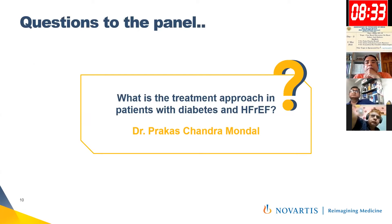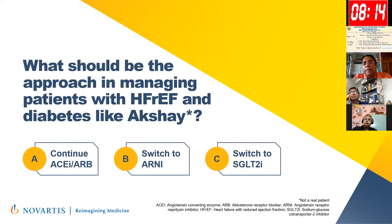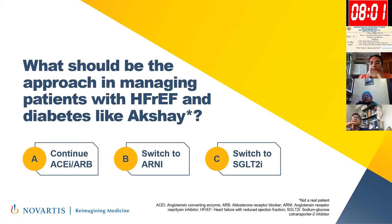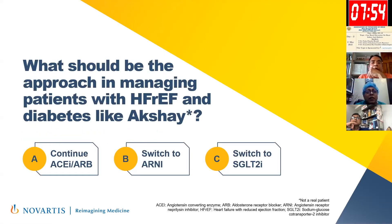The second question is: what is the treatment approach in patients with diabetes and reduced ejection fraction — should we stay on ACE inhibitor and ARB, or switch to ARNI and add an SGLT2 inhibitor? Dr. Raj Chaudhuri suggests combining both ARNI and SGLT2 inhibitors. I agree — that is the most scientific approach now. Option A is correct: we should combine both, meaning switch to ARNI and introduce an SGLT2 inhibitor.